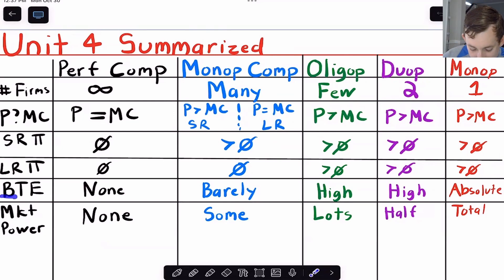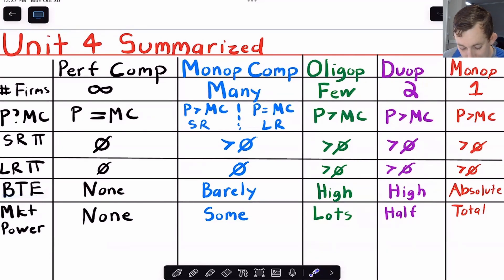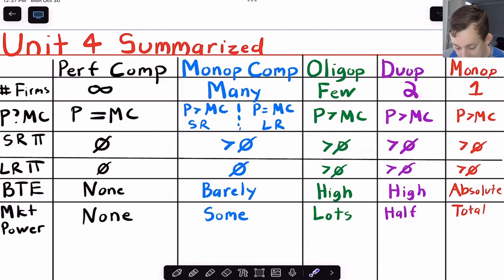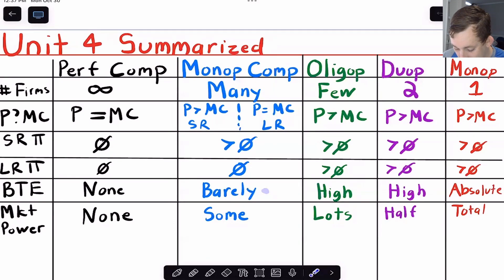So what does BTE mean? That means barriers to entry. In perfect competition, there are no barriers to entry — anyone with a cow can enter the dairy market. In monopolistic competition, there might be a little bit of barriers to entry, but not really.